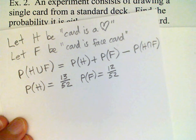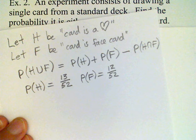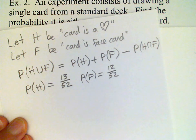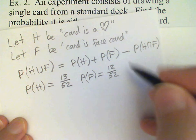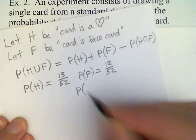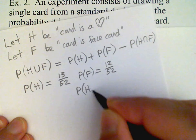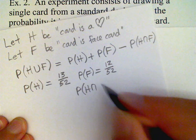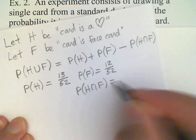And what does the intersection mean? Well, this is those face cards which are also hearts, or those hearts which are also face cards — namely, the king, queen, and jack of hearts. So the probability of H intersect F is 3 out of 52.